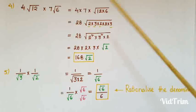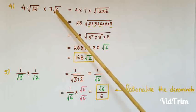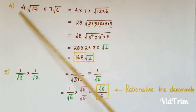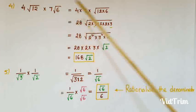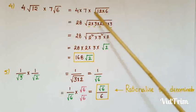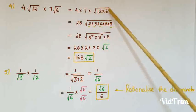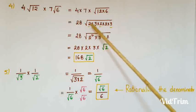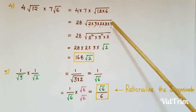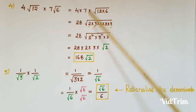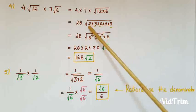The fourth example is 4√12 × 7√6. First, separate the rational and irrational parts: 4 × 7 × √12 × √6 = 28 × √(12 × 6). Now prime factorize 12 and 6: 12 = 2 × 2 × 3, and 6 = 2 × 3.